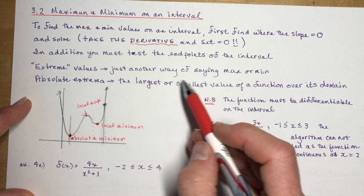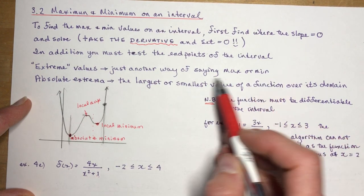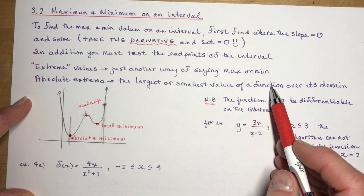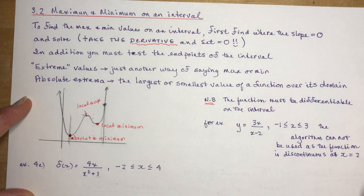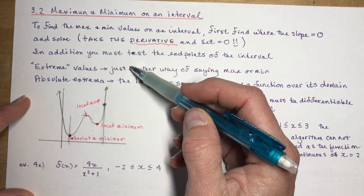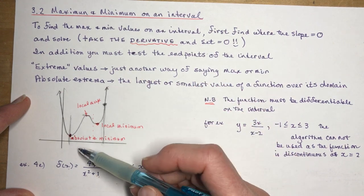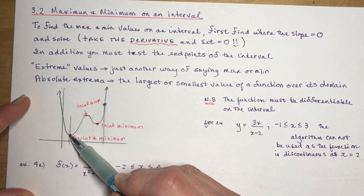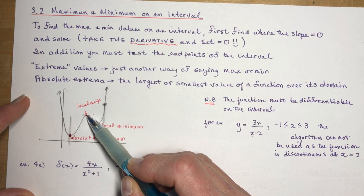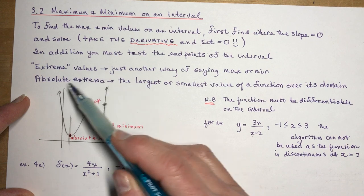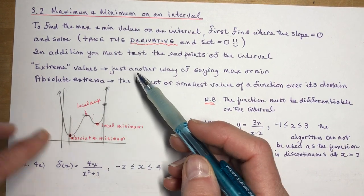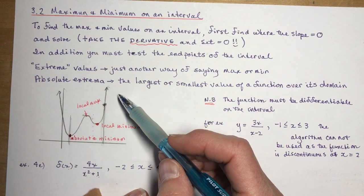So the extreme values is just another way of saying maximum or minimum values. The absolute extrema are the largest or smallest value of a function over its domain. So if we were looking at this function, the entire function over its entire domain, you would be able to say that it has an absolute minimum here, a local minimum here, and a local max here. It does not have an absolute maximum value because the function continues. Over its domain, we don't know what the maximum value is. It's infinity, which isn't a number.